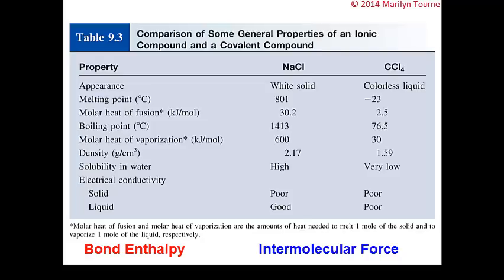Ionic compounds, on the other hand, have much stronger forces, so they are usually solids at room temperature with very high melting points. Many ionic compounds are soluble in water and conduct electricity because they are strong electrolytes. Most covalent compounds are insoluble in water and their aqueous solutions generally don't conduct electricity. Table 9.3 compares sodium chloride, an ionic compound, with carbon tetrachloride, a covalent compound — sodium chloride is a solid at room temperature while carbon tet is a liquid.